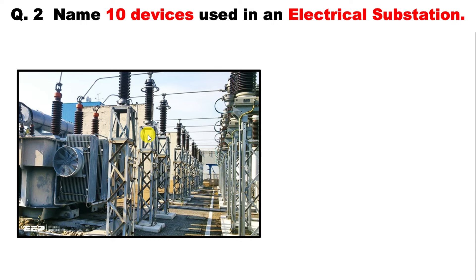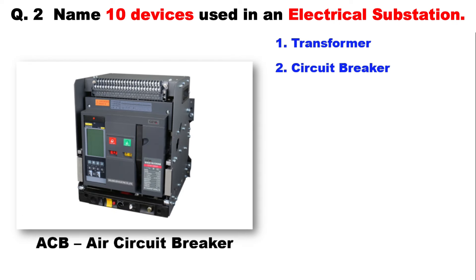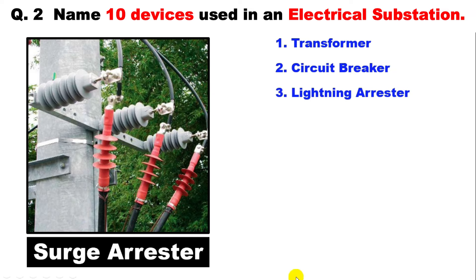The second question asks you to name 10 equipment used in an electrical substation. As you can see in this picture, a transformer is used in the substation — so first, transformer. To provide incoming power supply to the transformer we use VCB, and for outgoing power supply we use ACB, so second is circuit breaker.